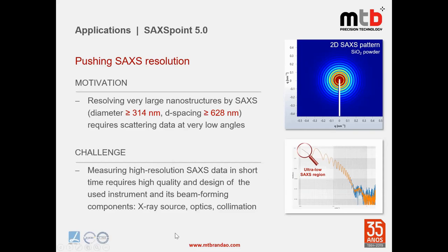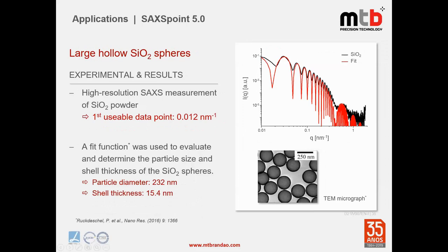An example is silicon oxide spheres. High-resolution SAXS measurements were performed and the scattering curve showed pronounced minima related to the form factor of monodisperse particles. A second length scale corresponds to the shell thickness of the hollow spheres. Using a fit function with the first data point at 0.012 nm⁻¹, the particle diameter was determined to be 232 nm and the shell thickness 15.4 nm.